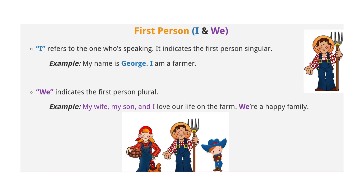First person: I and we. 'I' refers to the one who's speaking — it indicates the first person singular. Example: 'My name is George. I am a farmer.' 'We' indicates the first person plural. Example: 'My wife, my son, and I love our life on the farm. We're a happy family.'